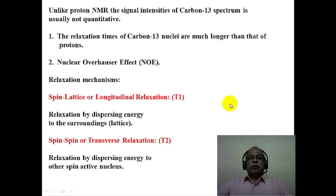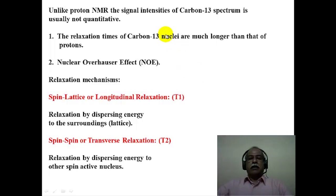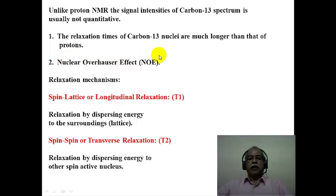Unlike proton NMR signals, which can be integrated and quantified, carbon-13 NMR spectra are usually not quantitative. There are two reasons: first, carbon nuclei have much longer relaxation times, so signals can become inadvertently saturated before the next pulse. Second, different carbons have different nuclear Overhauser effect enhancements. Because of these two factors, signal intensities are not proportional to the number of carbons present in different chemical environments.